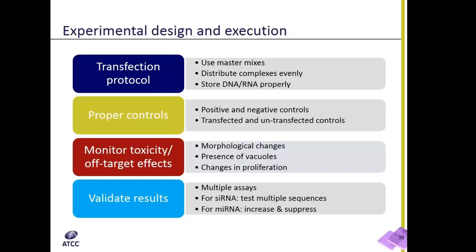You should always use a positive control, such as an empty GFP plasmid or RNAi for a housekeeping gene like GAPDH. For a negative control, you can use an empty plasmid or scrambled siRNA.